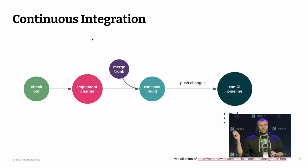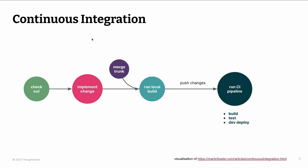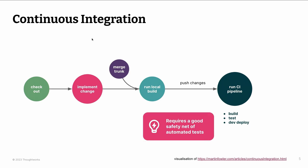Then you send all this off to your CI pipeline. The CI pipeline runs a build, test, and maybe something like a development deployment. This step — and also the local build step — requires a very good safety net of automated tests. This is what makes CI effective. Because if you just run a build and don't get feedback whether tests pass, you might have poor confidence in whether the code does what you expect. What you get out of this is a package we call the potentially deployable artifact — a version of your code from which you are pretty sure you could deploy it.